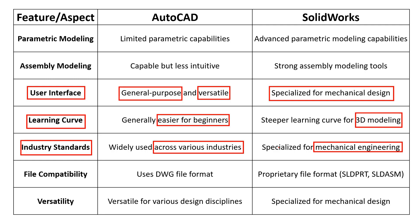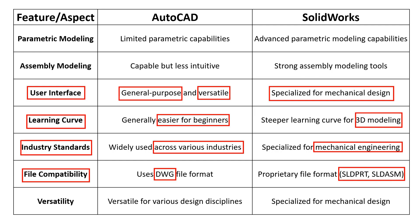File Compatibility: AutoCAD uses the DWG drawing file format, which is a standard in the industry. It is compatible with various CAD software, facilitating collaboration with users of different tools. SolidWorks uses its proprietary file formats — SLDPRT for parts and SLDASM for assemblies — which may require conversion or special handling when collaborating with users of other CAD software.